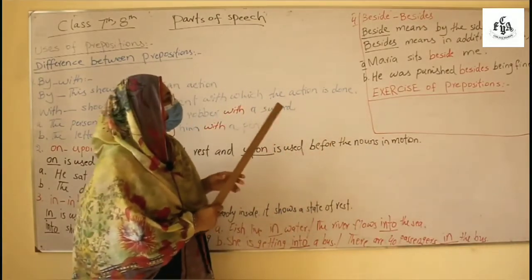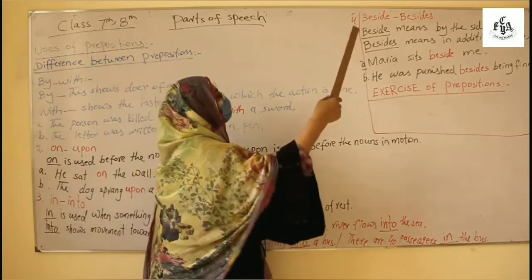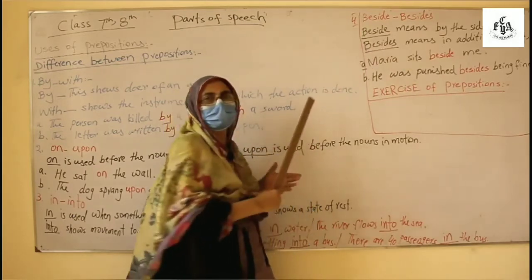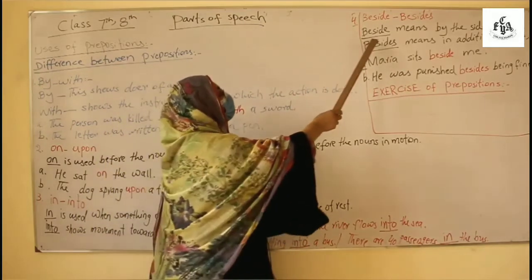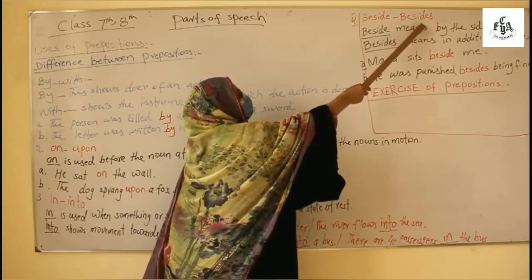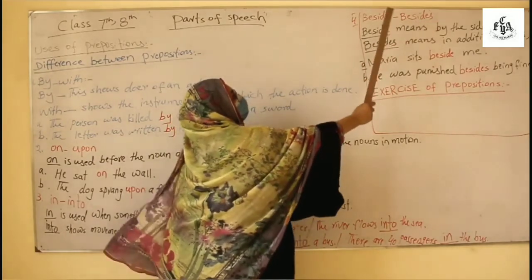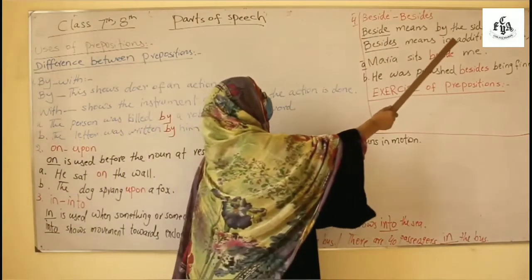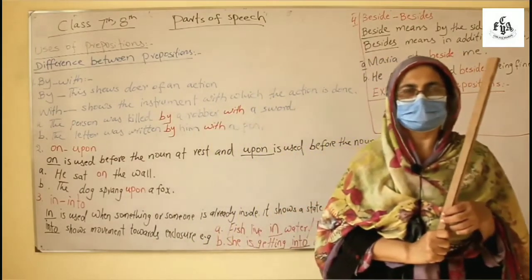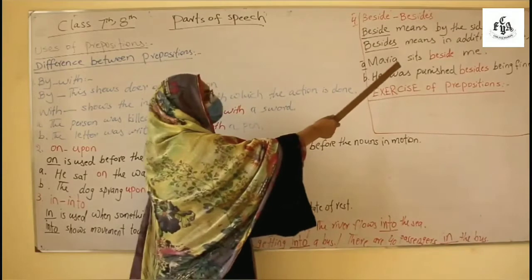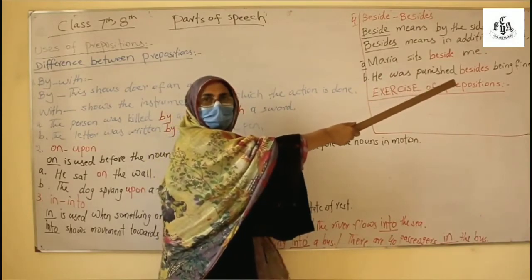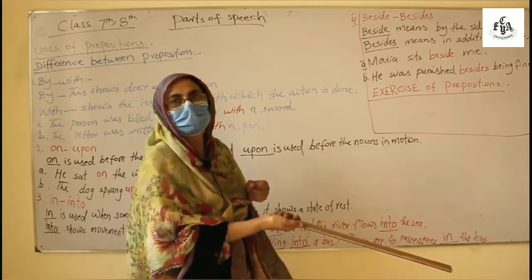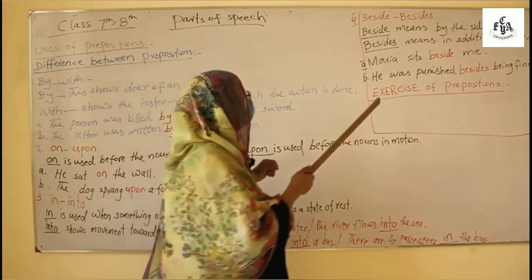I have given exercise pictures you can zoom that and you can practice them. Beside and besides, just s makes them different from each other. What is the difference. Beside means by the side of like I am standing beside the dice. Maya sits beside me, understand, or the chair is beside the dice, the teacher is standing beside the table.